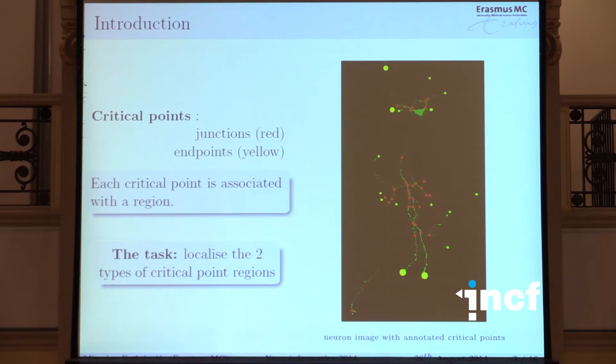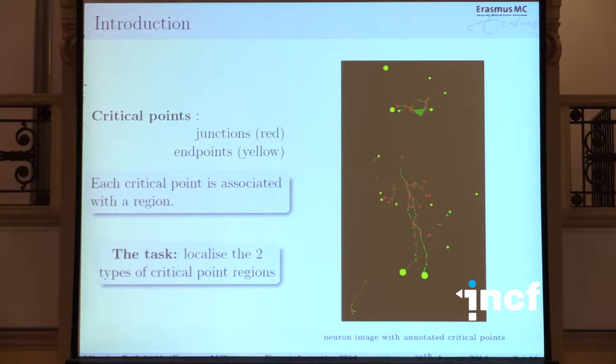I'm going to talk about the detection of these points in electron microscope images. This is how the image looks — that's what cell biologists use — a wide-field light microscopy image, with annotated critical points shown on the image. Each is associated with a spherical region. Algorithms for detecting linear structures are already standardized, but at these critical points the space breaks, and there's a lack of methodology dealing with these critical locations. Tips are also very important for automatic neural reconstruction.